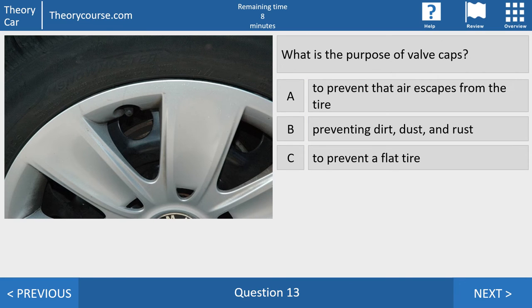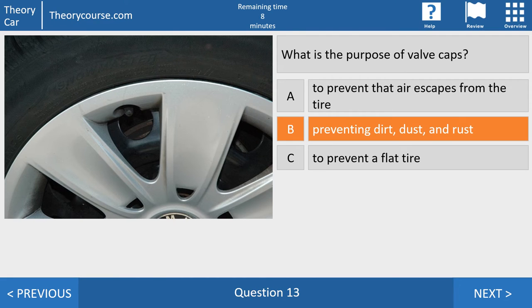Question number 13. What is the purpose of valve caps? Answer A. To prevent that air escapes from the tire. Answer B. Preventing dirt, dust and rust. Or answer C. To prevent a flat tire. And it's not answer A. It's answer B. Because if you don't have valve caps, the valve itself can have dirt, can be rusty, everything. And then the air can escape from the tire. But the purpose of the valve caps, preventing dirt, dust and rust.